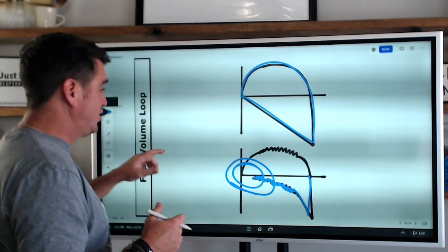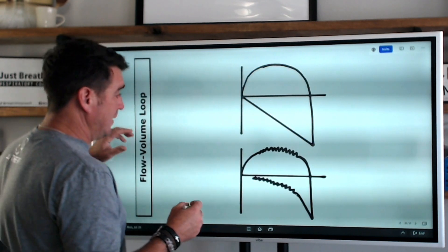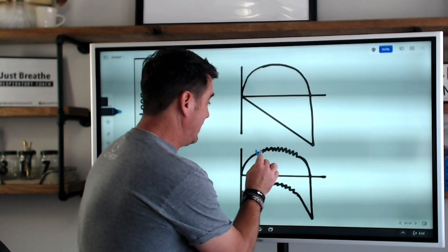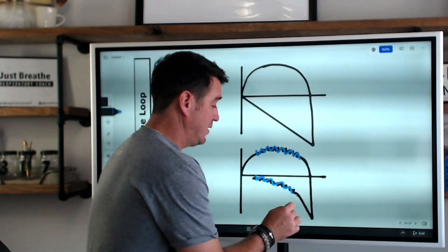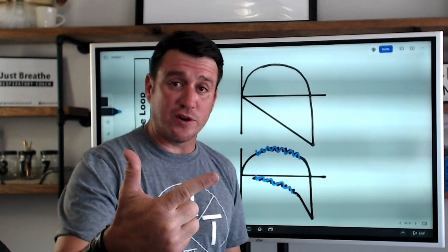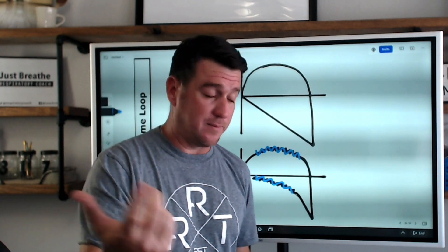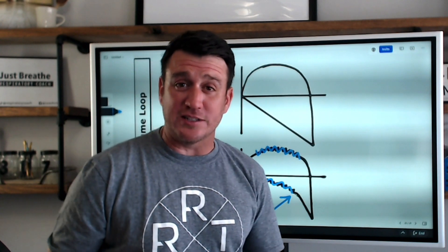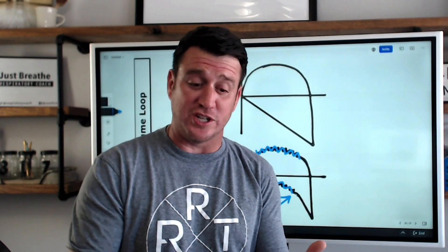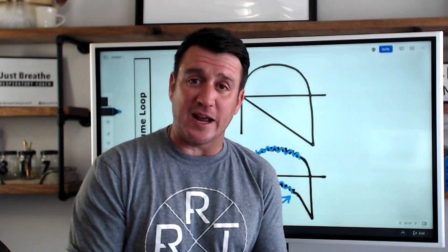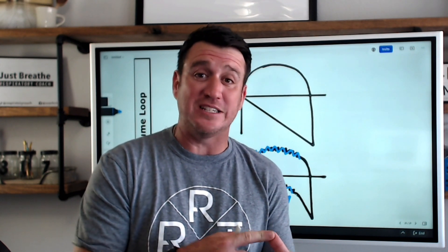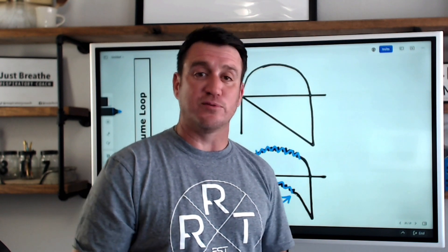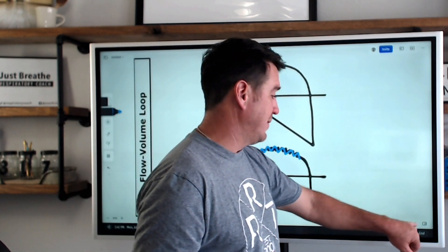So the two big abnormalities we've identified: sawtooth pattern — secretions, water in the circuit, bronchospasm. Scoop in the loop — anything that might cause an obstruction: bronchospasm, secretions, a tumor in the airway, a foreign body in the airway, a patient biting on the endotracheal tube, or just the nature of an obstructive lung disease like emphysema.